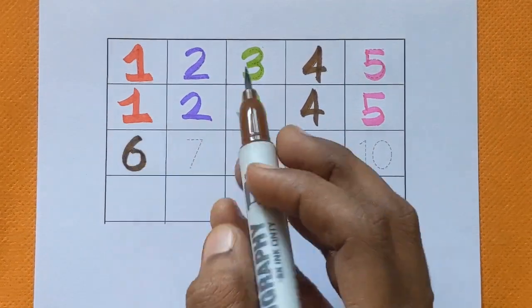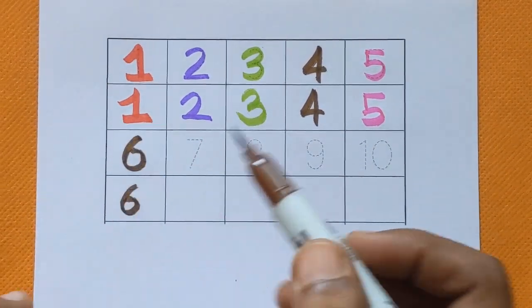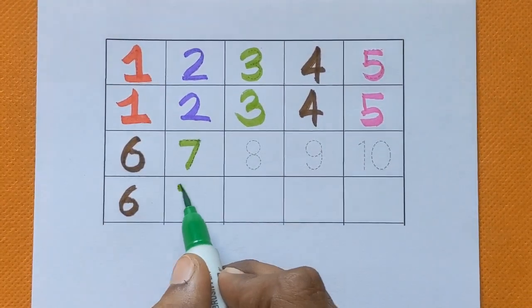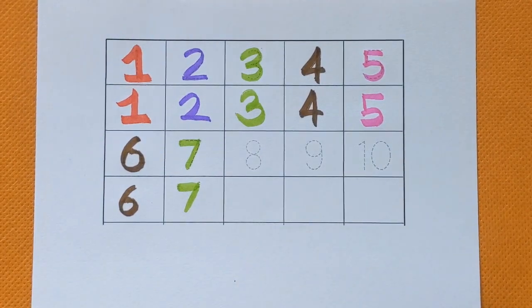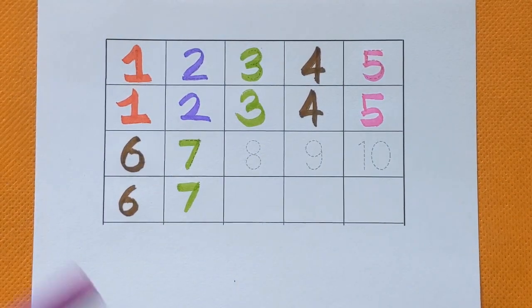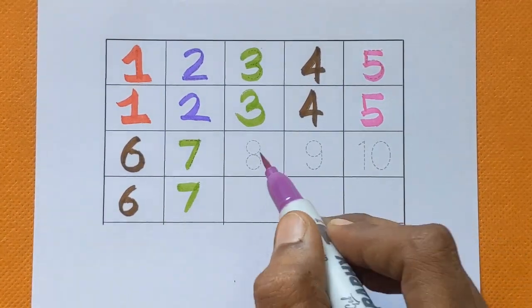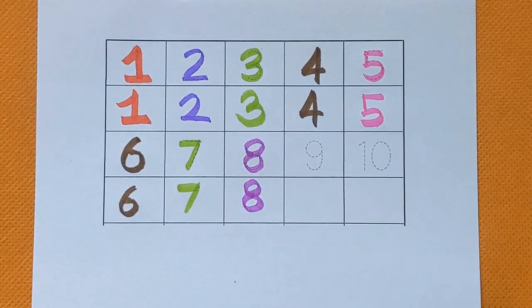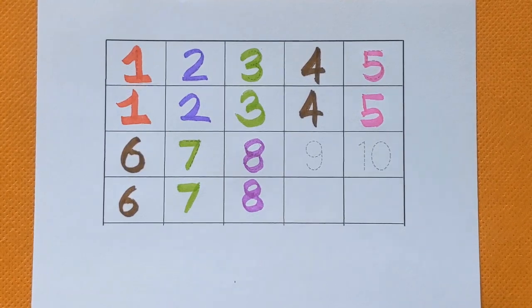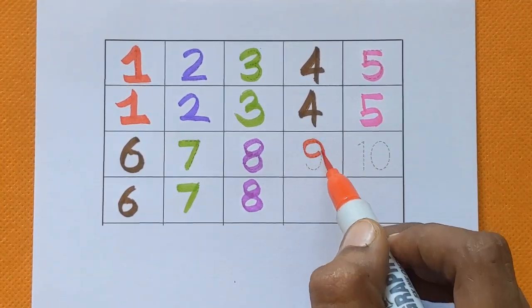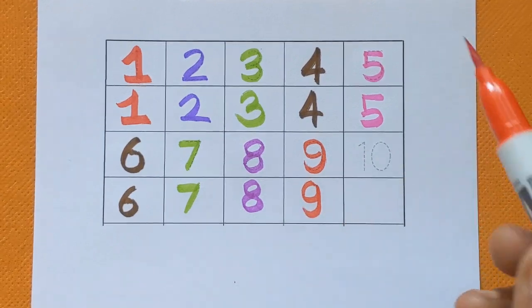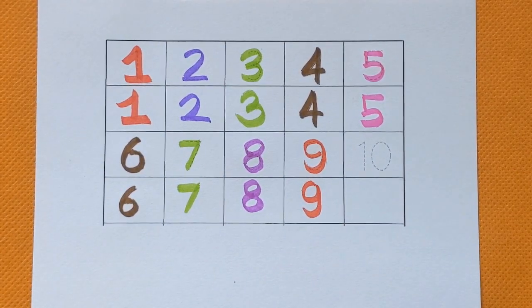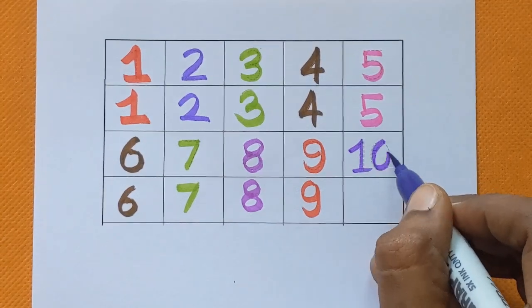Number six, brown color. Number seven. Which number is this? This is number seven, green color. Next is number eight. Number eight, purple color. Number nine, red color. And number ten, one-zero-ten.